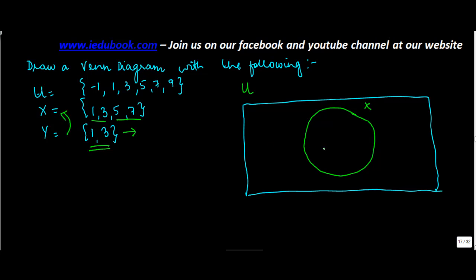Now diagrammatically, if this is a subset of this, then ideally this entire area or the circle represents 1, 3, 5, and 7.